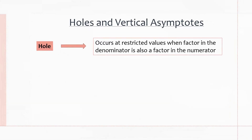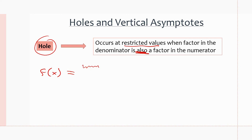Moving on to holes and vertical asymptotes, and exploring the graphs of rational functions. A hole occurs at restricted values when the factor in the denominator is also a factor in the numerator. If a factor like (x − 2) appears in both the numerator and denominator, we can cancel it out, and whatever value makes that factor equal to zero — in this case x = 2 — there will be a hole at that x location on the function.